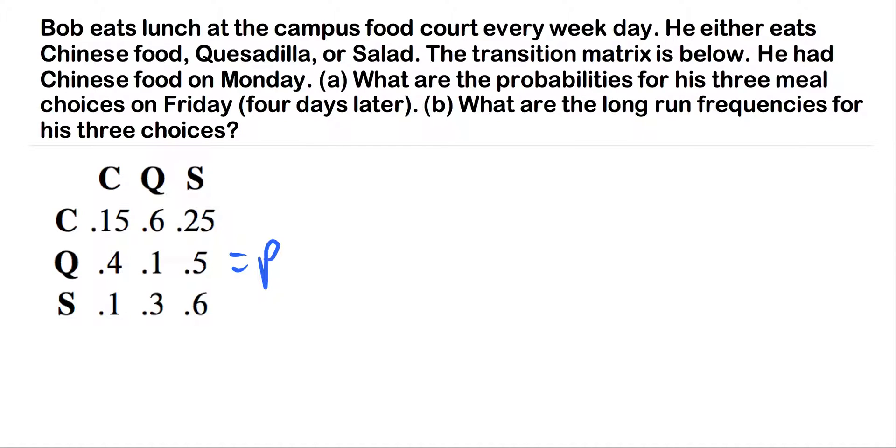If we're starting here on Monday, what would we want to do if we wanted to get to Tuesday? We'd have to multiply by another P to get Tuesday's probability. So if we wanted to get to Friday, two days...